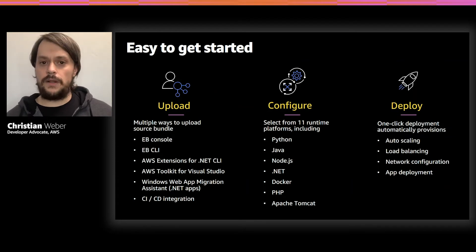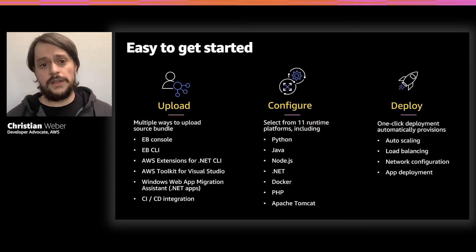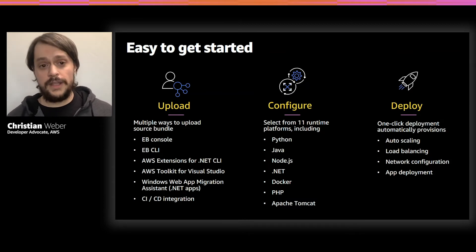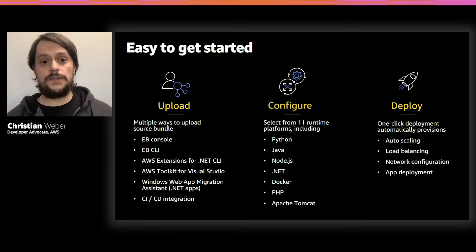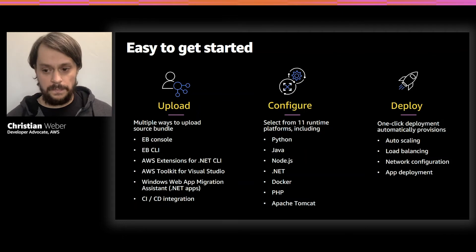One of the best things about Elastic Beanstalk is that it's very easy to get started. Whether you are choosing S3 as your source or using some other repository, this pipeline becomes very simple: upload, configure your environment for your workload, and then deploy it somewhere within Amazon Web Services. We like to do this as easily as possible, and we know that customers have a wide variety of choices when it comes to their technologies and workflows. What we wanted to do at Amazon was keep this workflow consistent and repeatable, and that's what we did with Elastic Beanstalk.